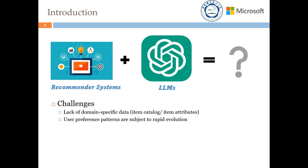On one hand, the specific item catalog and the attributes of items within a particular recommendation context may not be fully captured by large language models. On the other hand, user preference patterns are not only domain-specific but also subject to rapid evolution.